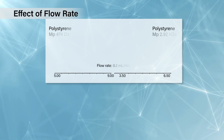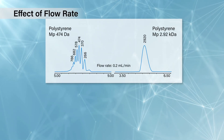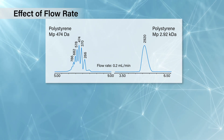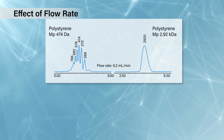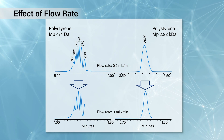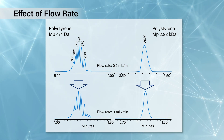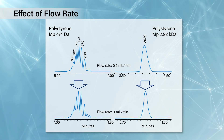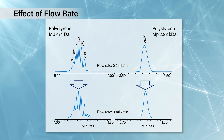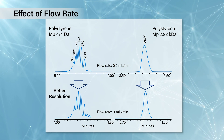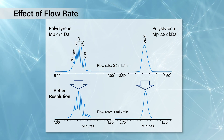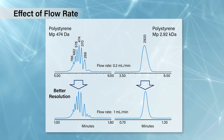Here we have an example of a low molecular weight polystyrene — a very low oligomeric sample around 400 Daltons and one up at 2.9 kilodaltons — and you see the effect of changing the flow rate. The top traces are at 0.2 ml per minute and the bottom ones are at 1 ml per minute. For those low molecular weight oligomers, you can see that by increasing the speed, you're actually increasing the resolution of your experiment, which is perhaps counterintuitive to those working with traditional GPC.